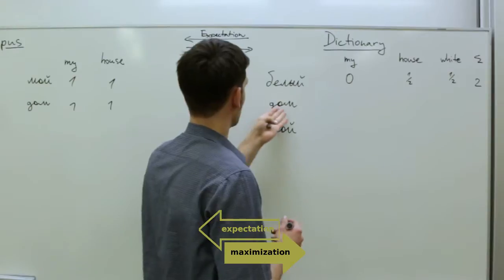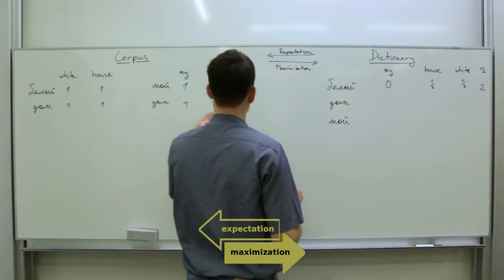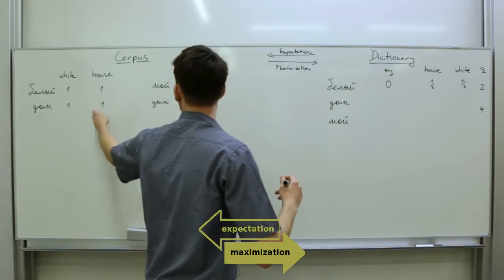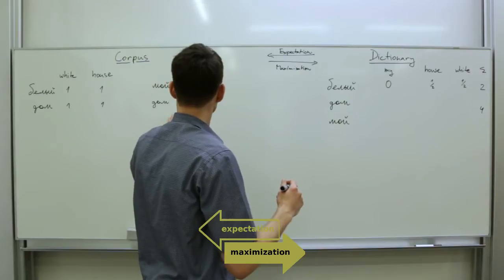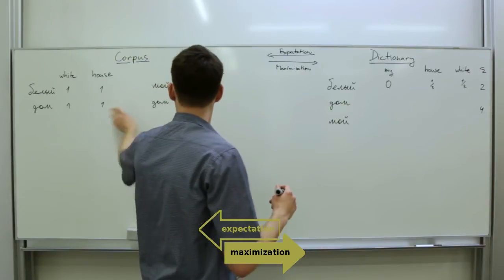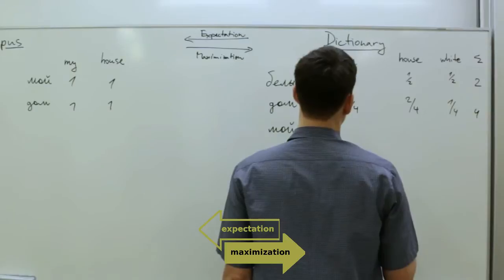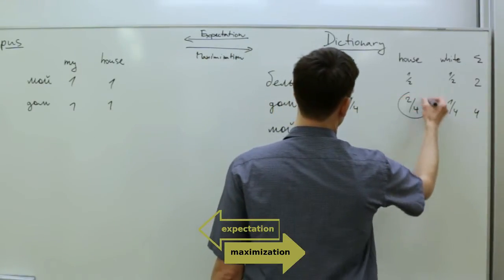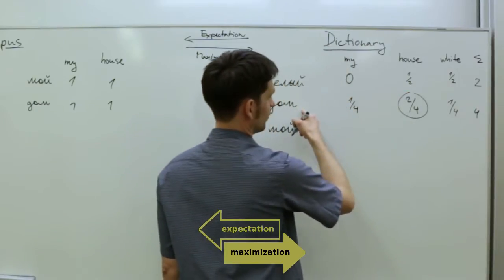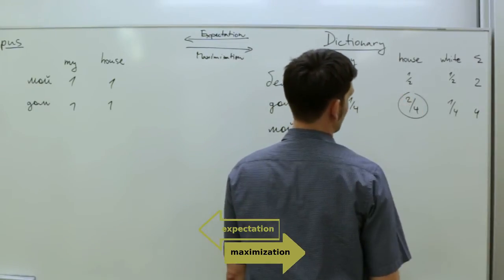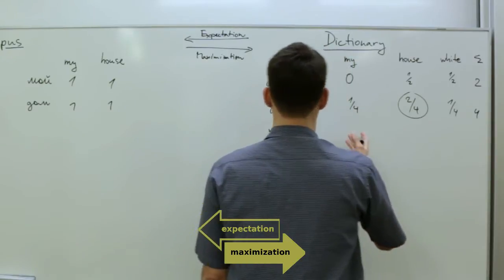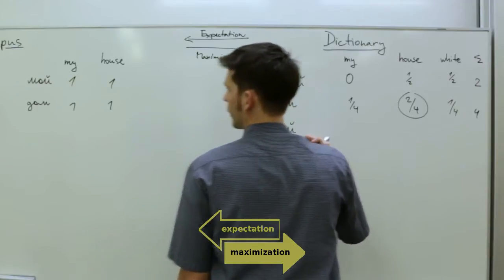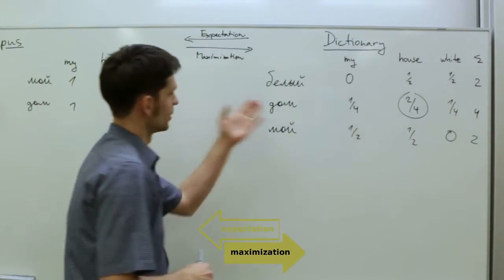Let's continue with the word DOM. The word DOM was seen four times overall in the corpus. And of these four cases, it was aligned with white once, with my once and with house twice. Normalizing these counts, we've already learned that the most likely translation of the Russian word DOM is the English house, the probability of 50%. Now let's fill also the last line of the dictionary, the possible translations of the word MOI. So that was the maximization step.